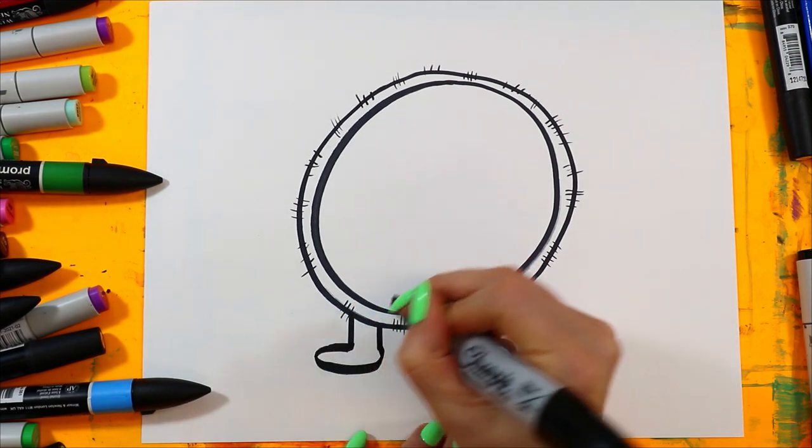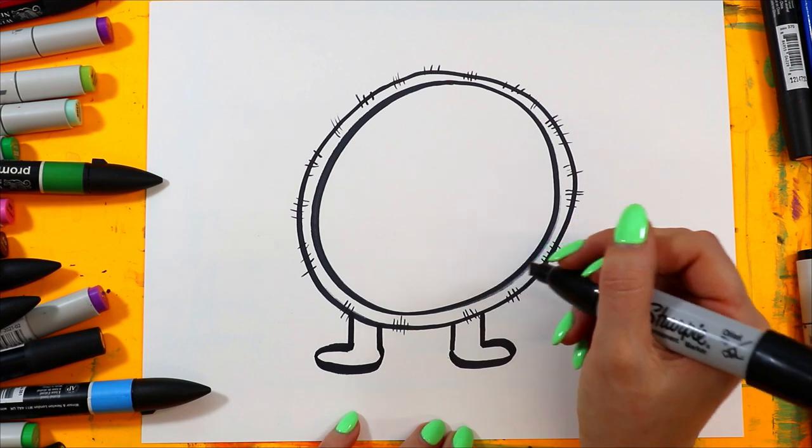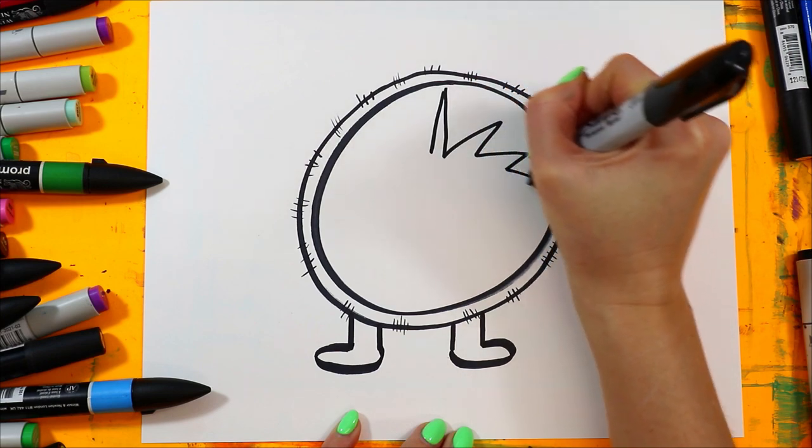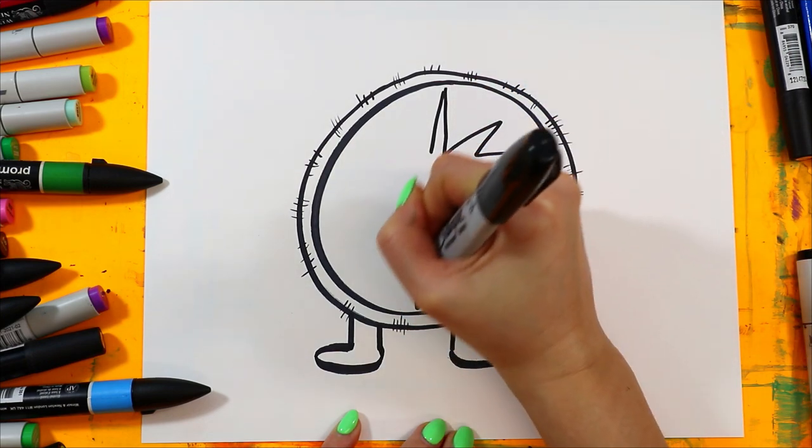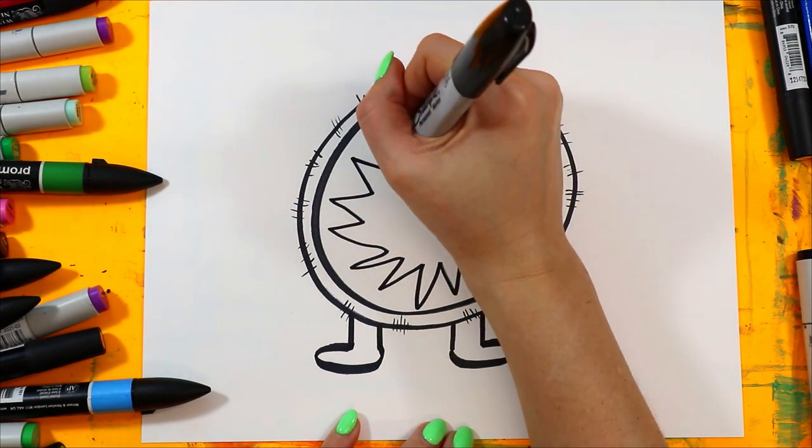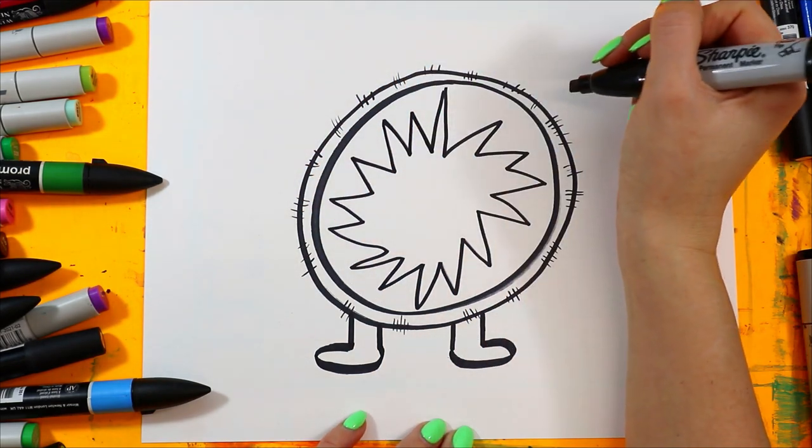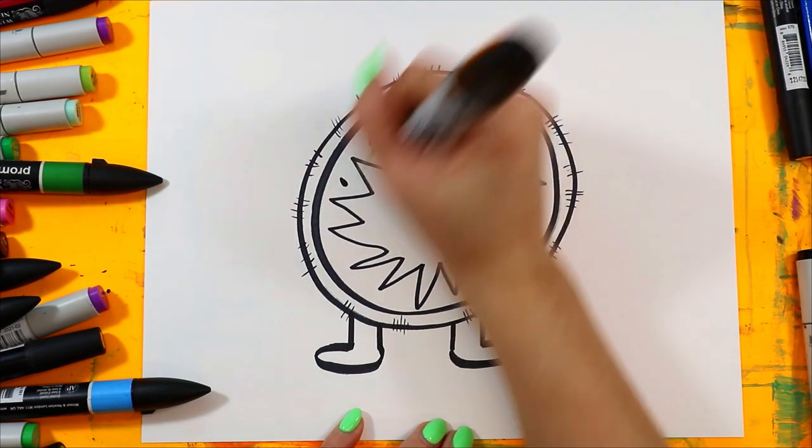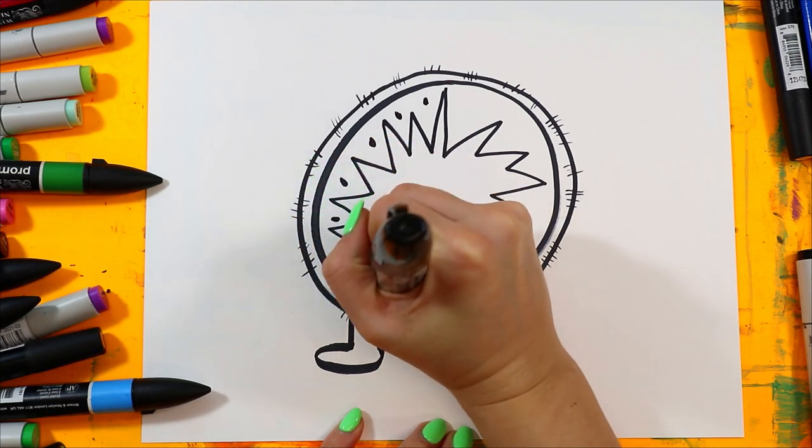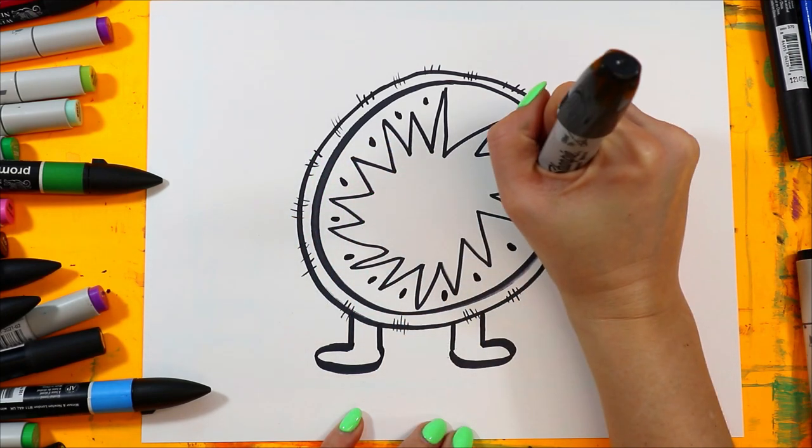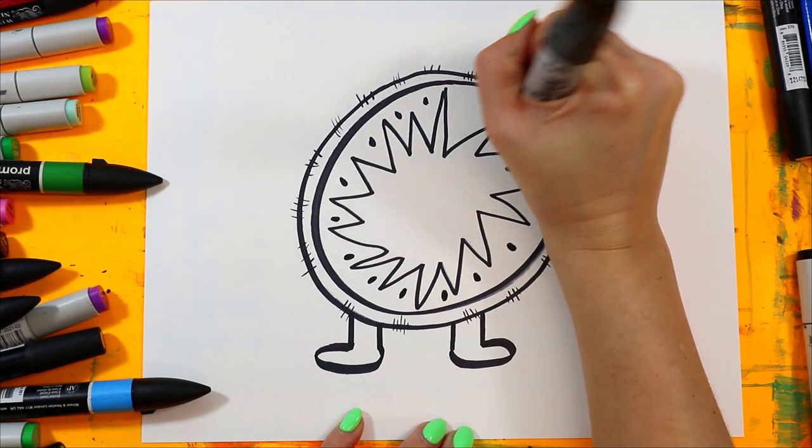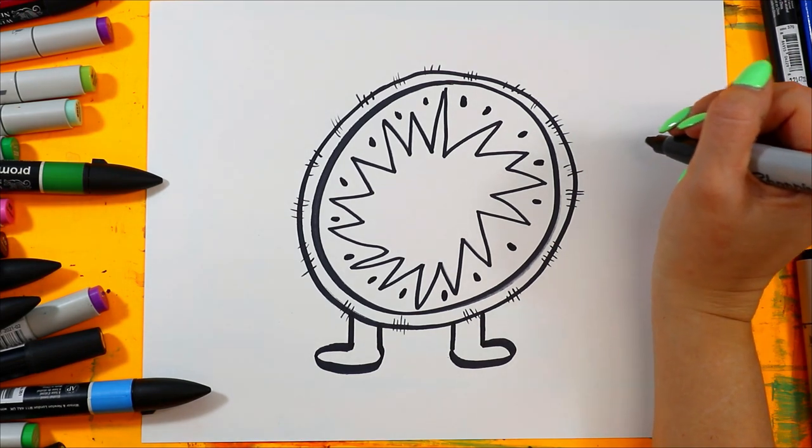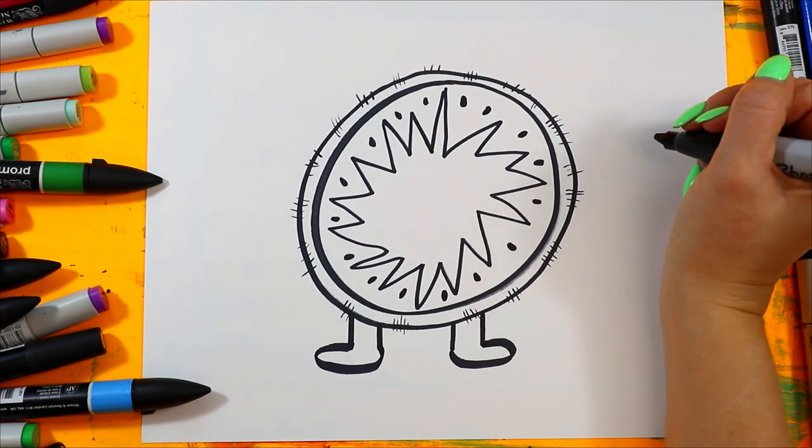We are going to add the inside of the kiwi. Add like a zig-zag line to a circle, then we are going to add little seeds.